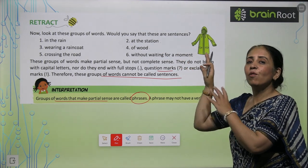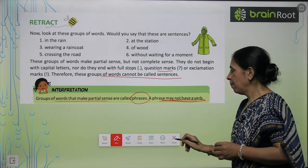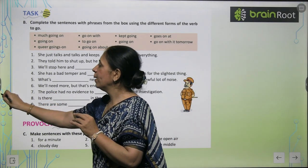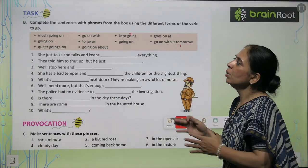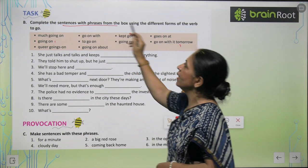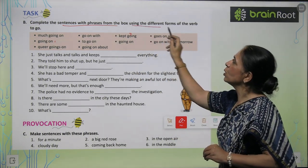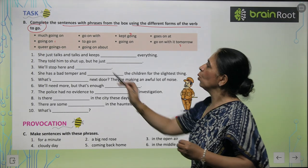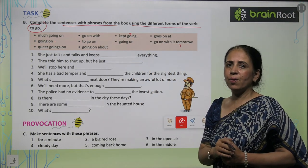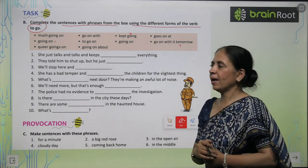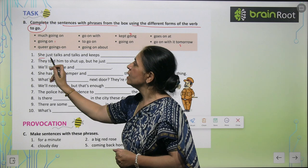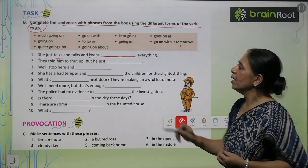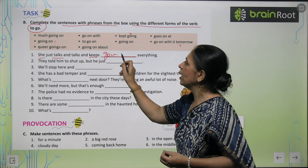So what do we call these? Phrases. Some phrases don't even have a verb. Now we come to the exercise — we have to complete the sentences with phrases from the box, using different forms of verbs. We need to fit the appropriate verb. First one: 'She just talks and talks and keeps going on everything.' So we write: keeps going on everything. Another sentence: 'They told him to shut up, but he just kept going.' So we write: he kept going.